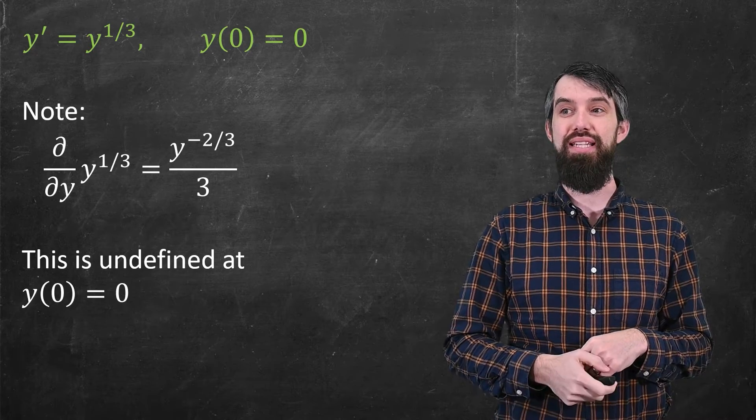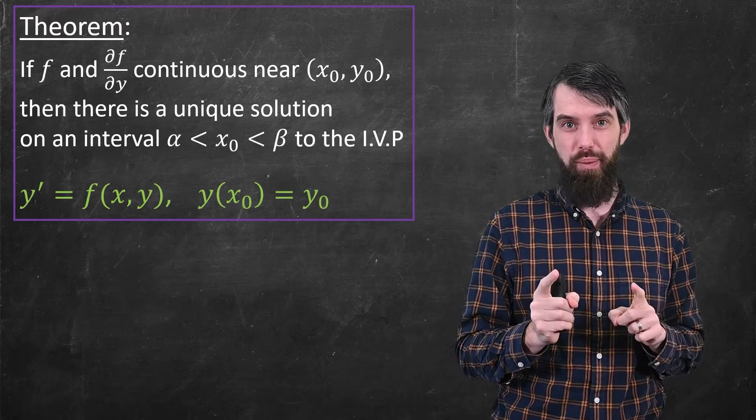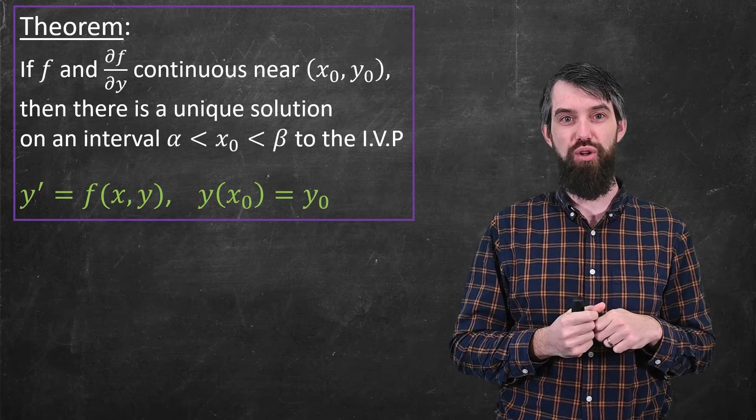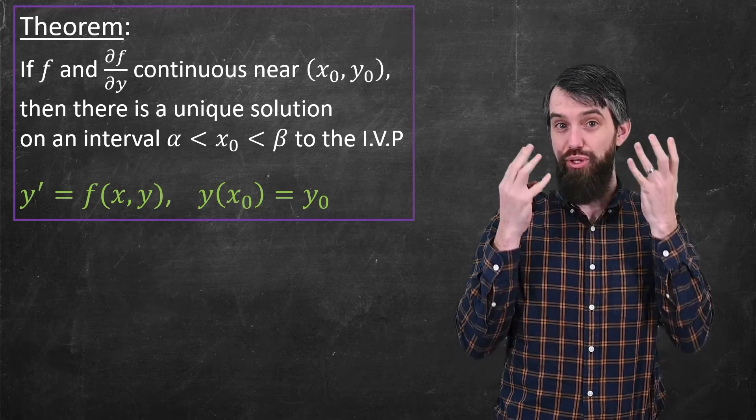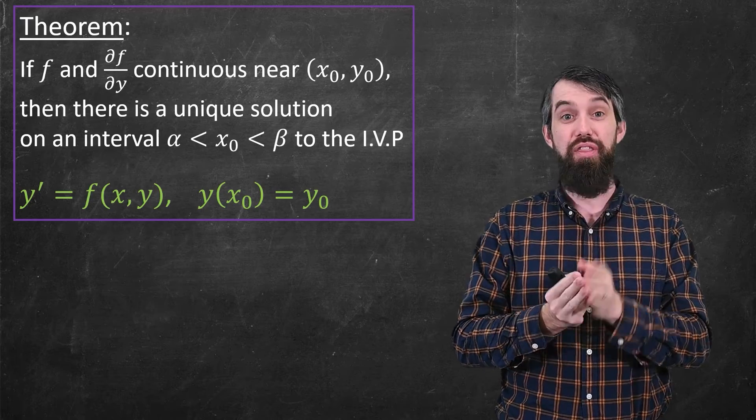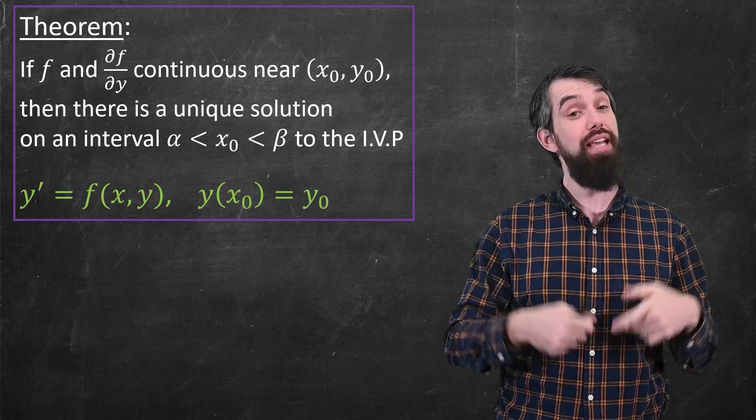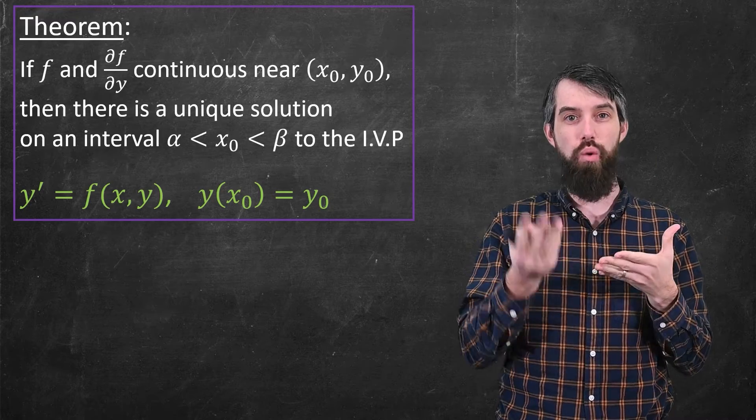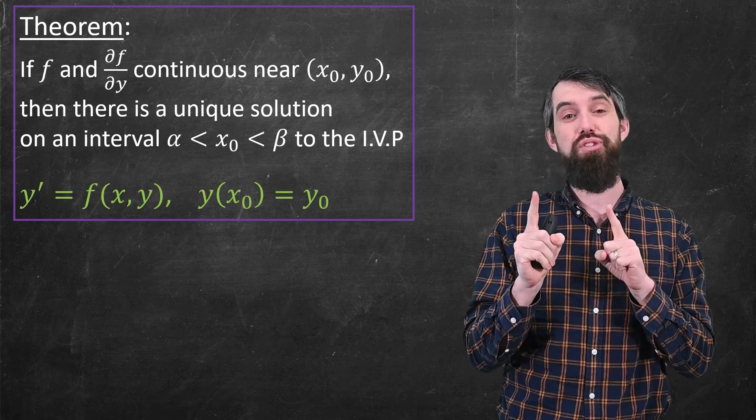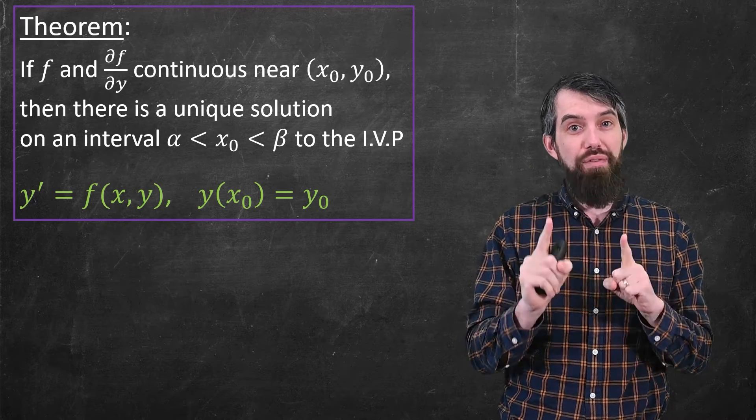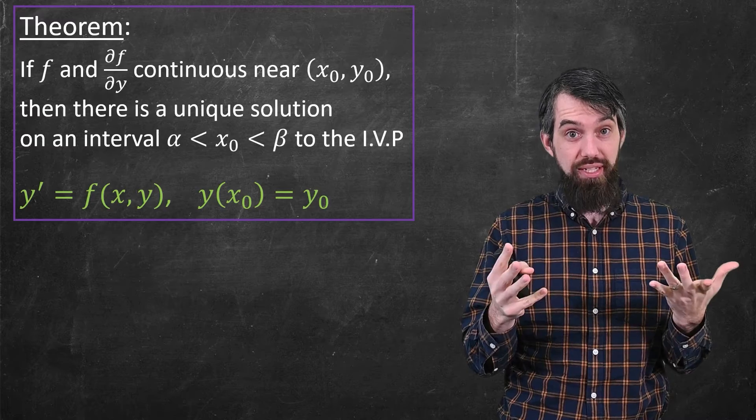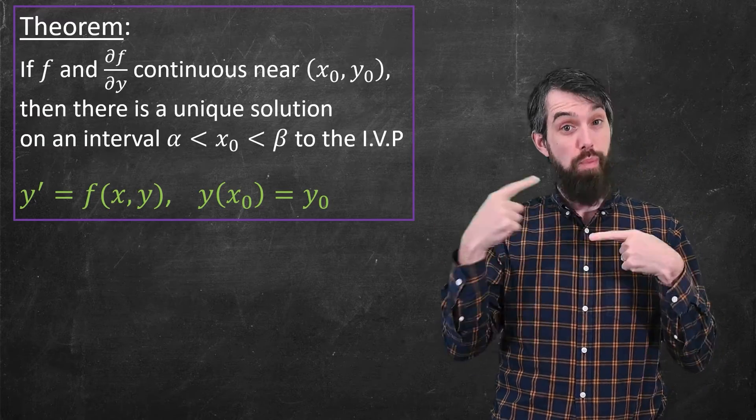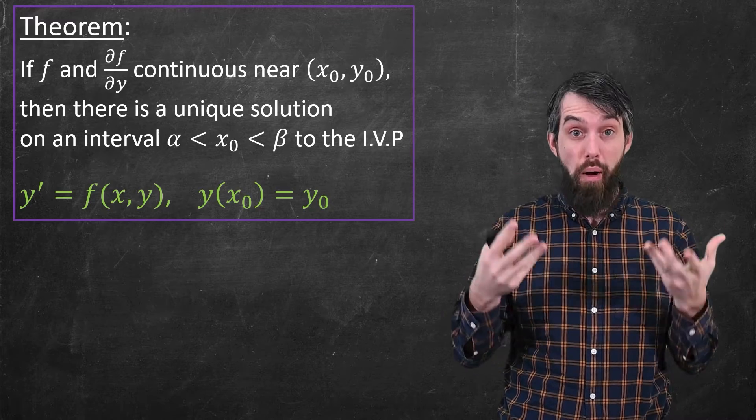Alright, so now let me state the existence and uniqueness theorem. Here it is, it's a bit of a mouthful. It makes two assumptions on the right-hand side of your differential equation on the y' = f(x, y). The first assumption on the f is that it's continuous in some neighborhood of the initial condition point, the (x₀, y₀). Additionally, I have to assume that the partial derivative of f with respect to y is also continuous on some neighborhood of that initial point (x₀, y₀). f and the partial derivative of f with respect to y are both multivariable functions. So you could imagine some rectangle, and the rectangle is about the point (x₀, y₀), and then both of those are continuous on that rectangle. So that's my assumption.